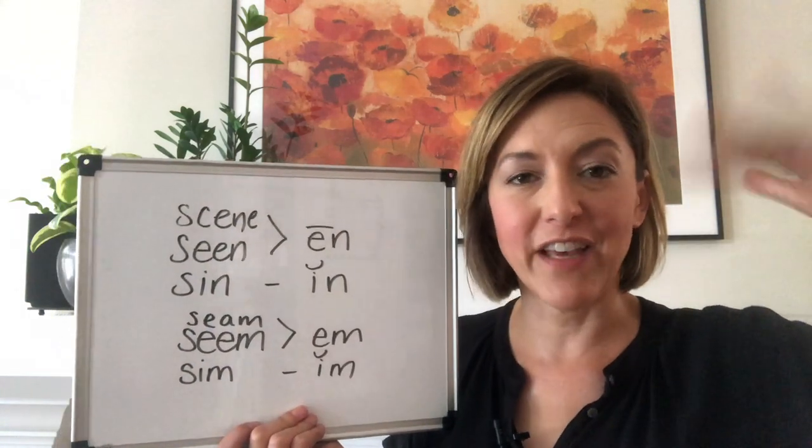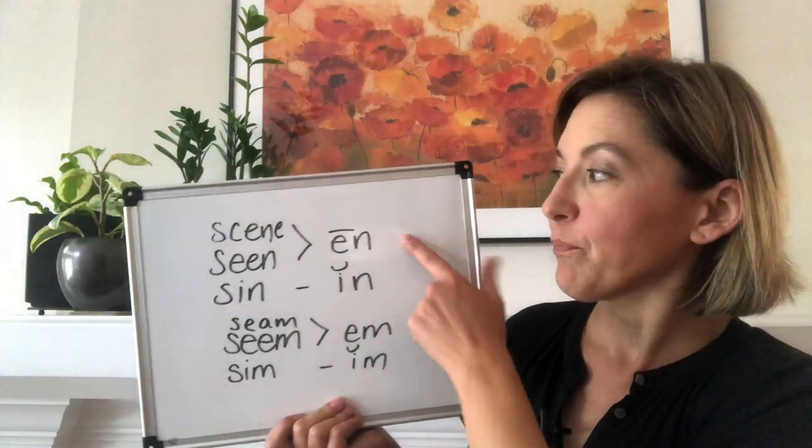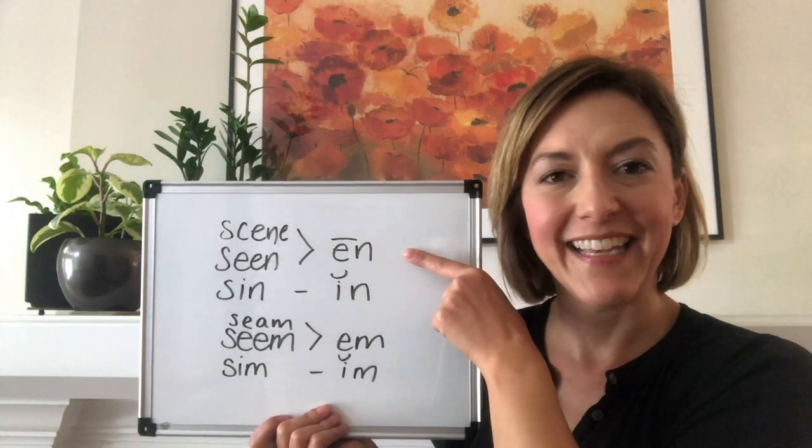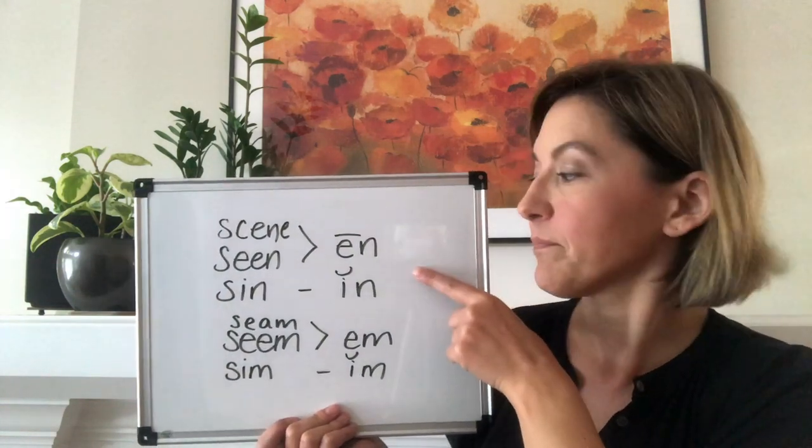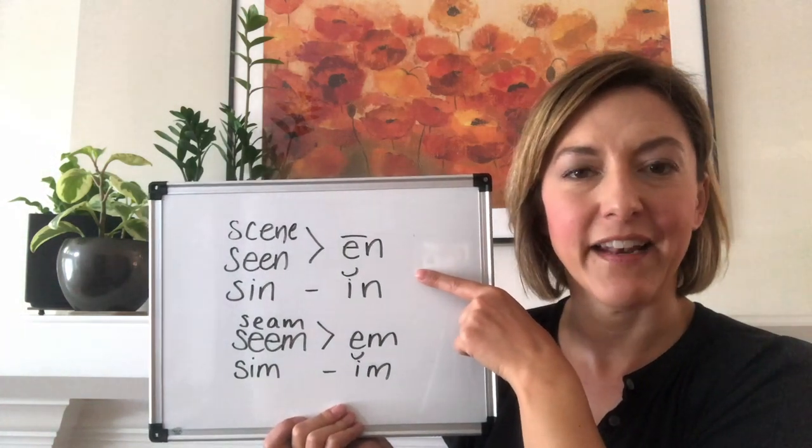So for the first two words we have: seen, seen, seen, sin, sin, sin. Seen, sin.